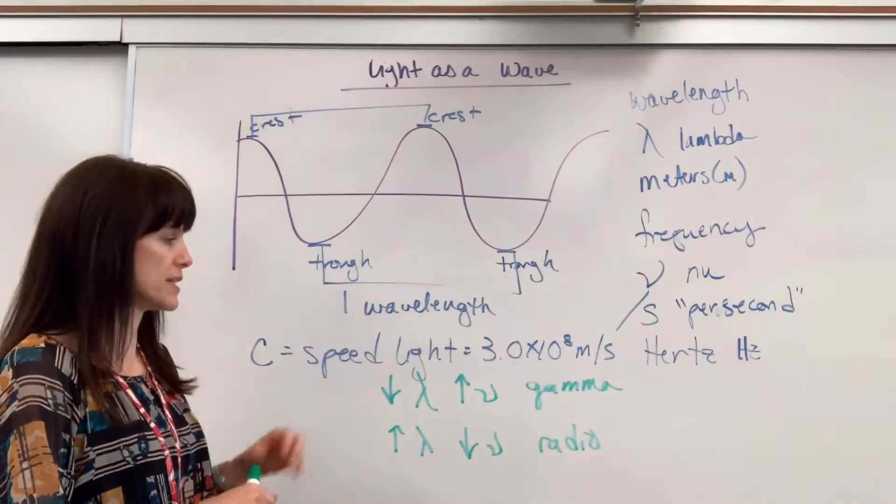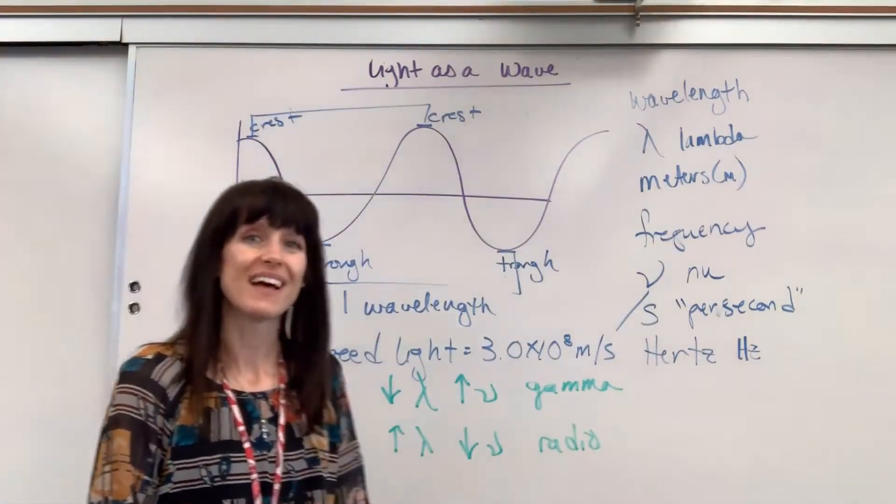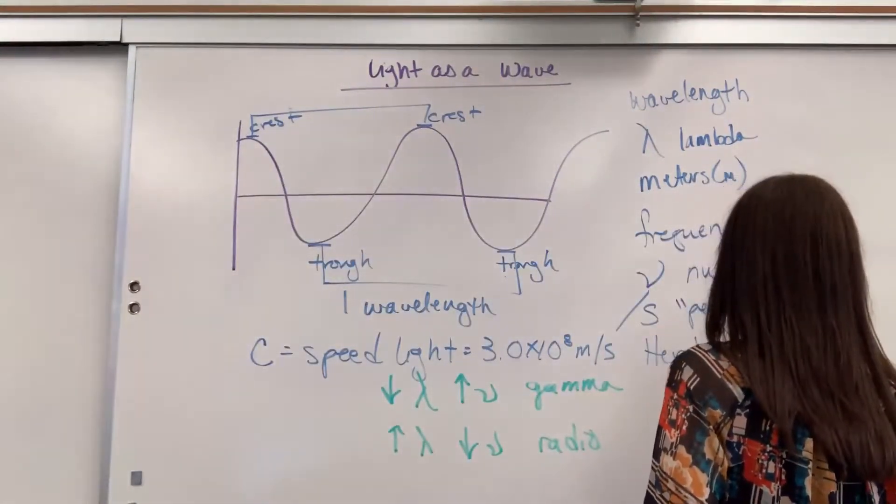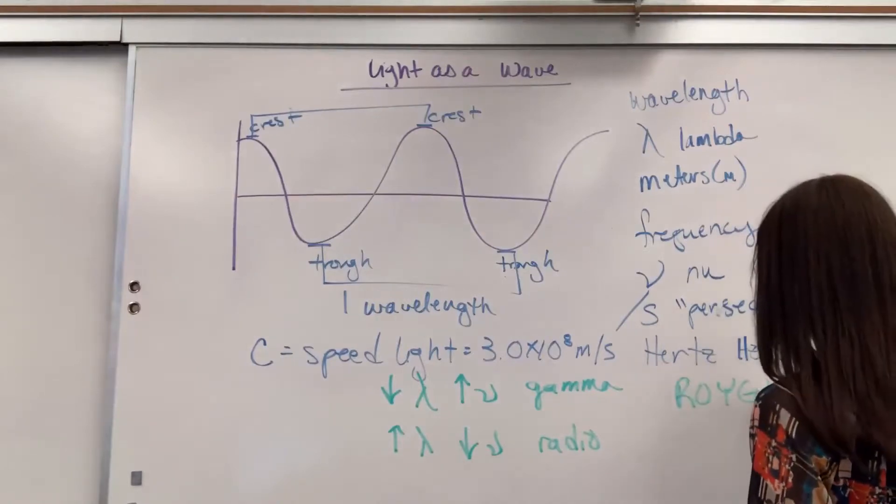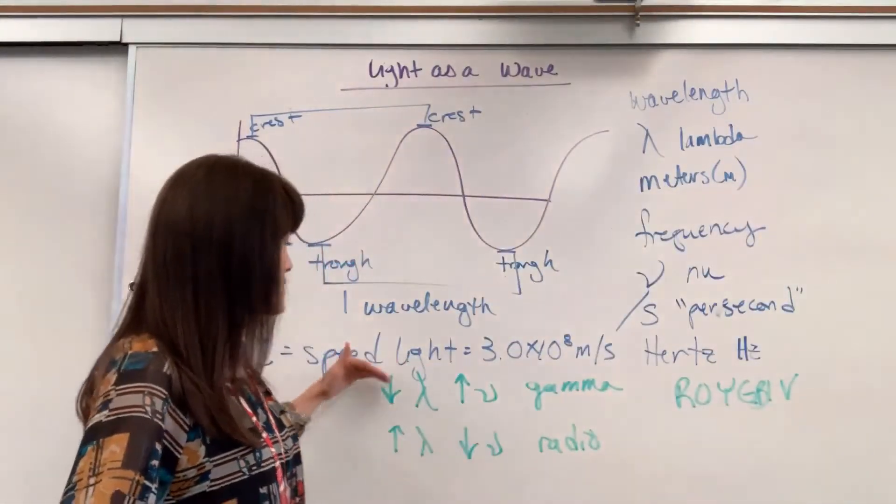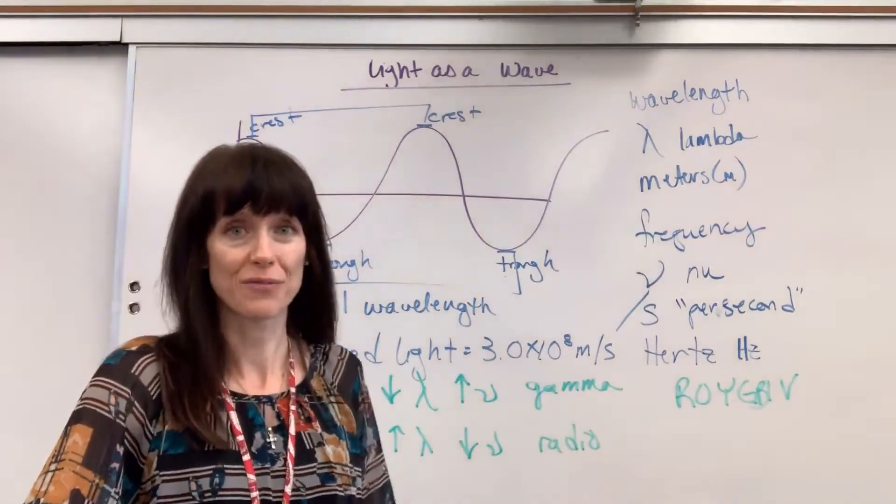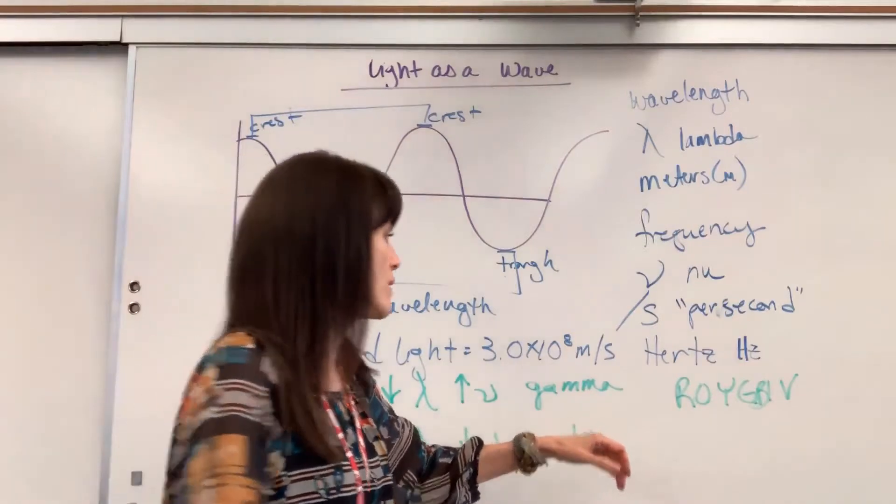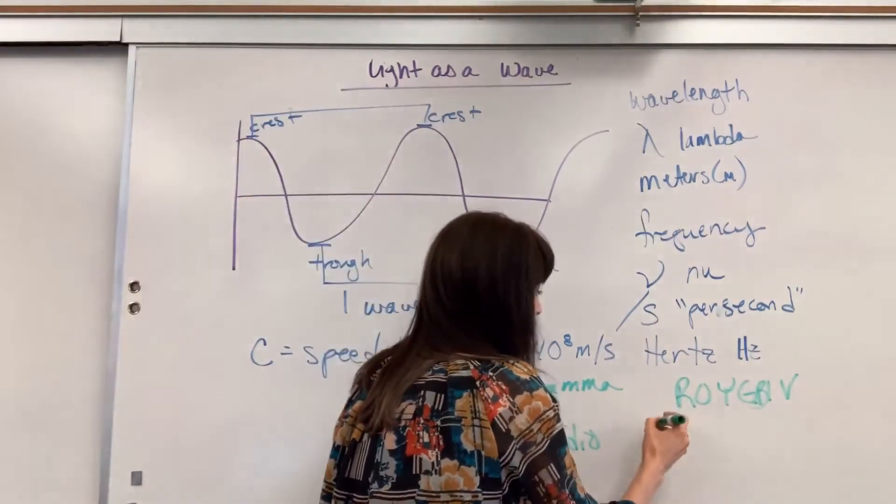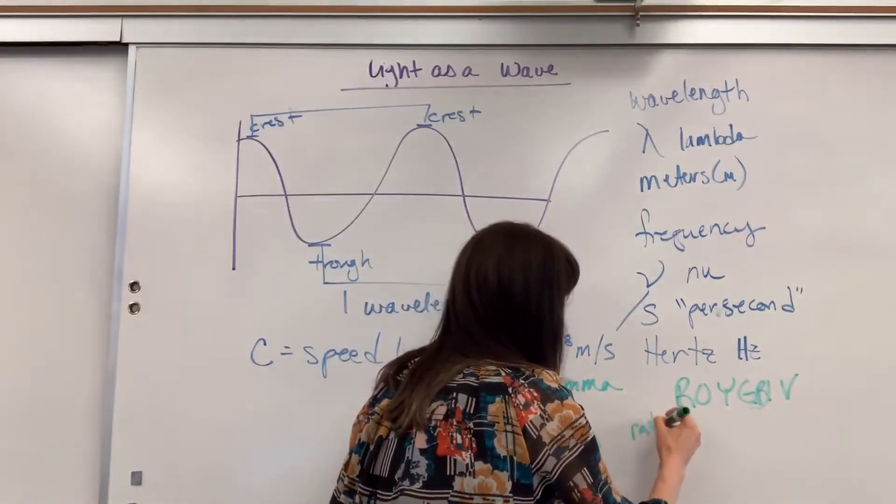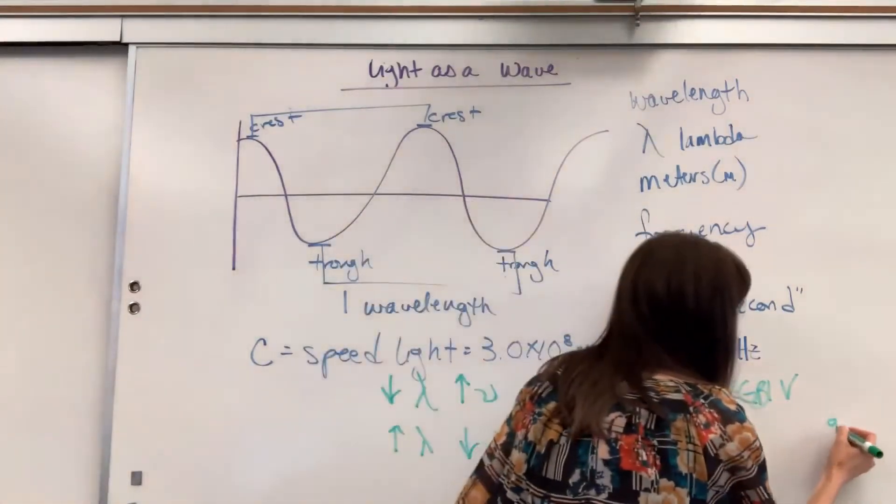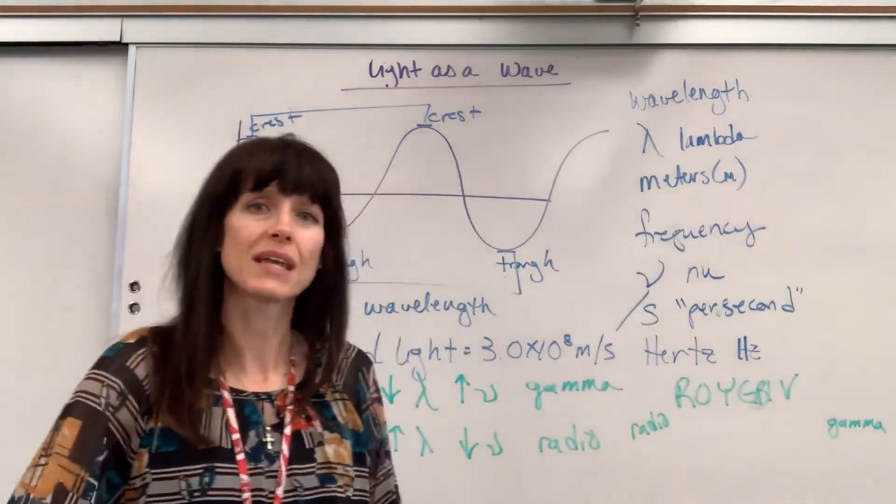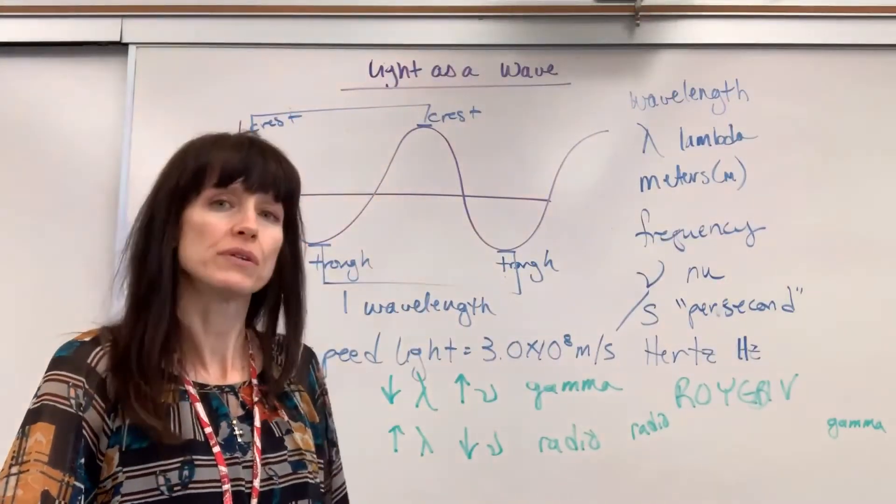Now something else that I want to attach to this is light. So ROYGBIV. Where light is associated with our frequencies. Red is on the same side as radio. So if I was looking at the electromagnetic spectrum, radio red, and over here by the violet, at the very, very end, is closest. Violet is closest to gamma radiation. So this is going to be something good for you to know.